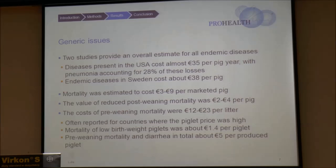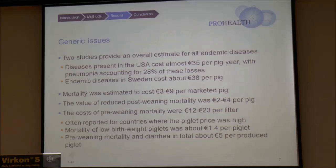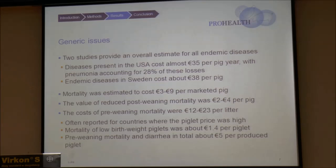Regarding mortality costs, they can vary quite a lot, but in the studies they are usually between 3 and 9 euros per pig sold. The value of post-weaning mortality is between 2 and 4 euros per pig. For the pre-weaning phase, economic losses associated with pre-weaning mortality were usually between 12 and 23 euros per litter — though these costs were often reported for countries where piglet prices tend to be quite high, such as Sweden. There was also one study reporting that mortality of low birth weight piglets was about 1.4 euros per piglet. Taking pre-weaning mortality and diarrhea together, they total about 5 euros per produced piglet, which is quite a significant amount.